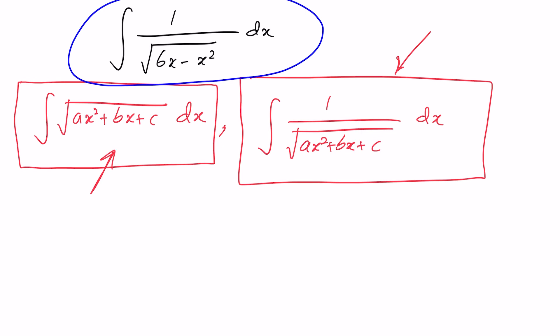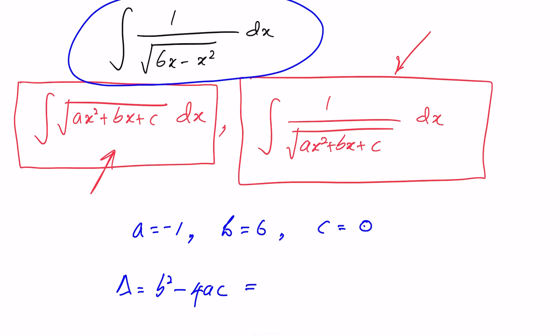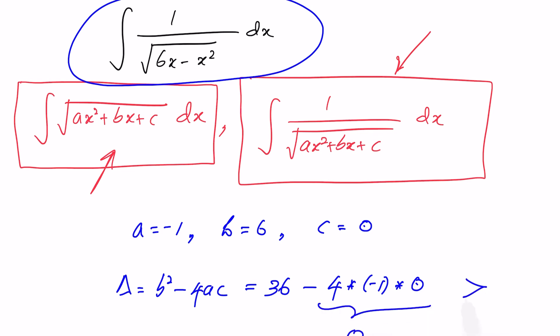Looking at 6x minus x² and comparing with ax² + bx + c, we identify that a = −1, b = 6, and c = 0. The next step is to find delta: delta = b² − 4ac = 6² − 4(−1)(0) = 36 − 0 = 36, so delta is positive.